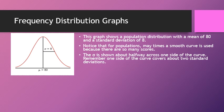Remember that one whole side of the curve covers about two standard deviations, and 95% of the scores are within two standard deviations of the mean. So we just want to go about halfway across because we want to show how far one standard deviation is.